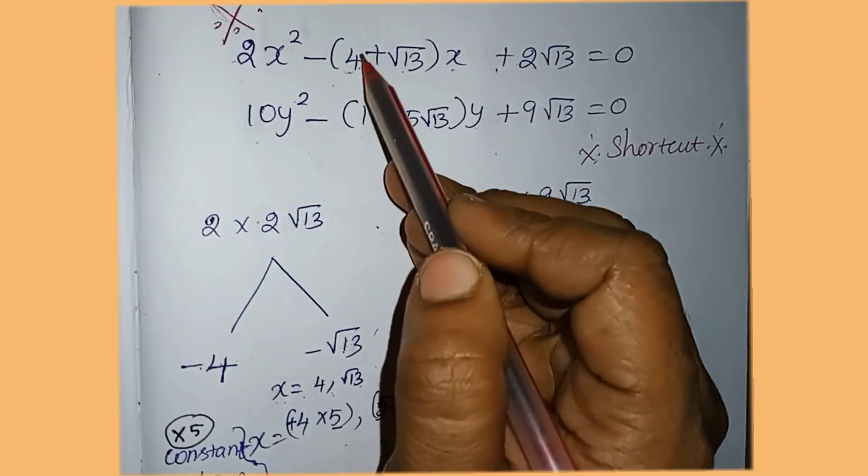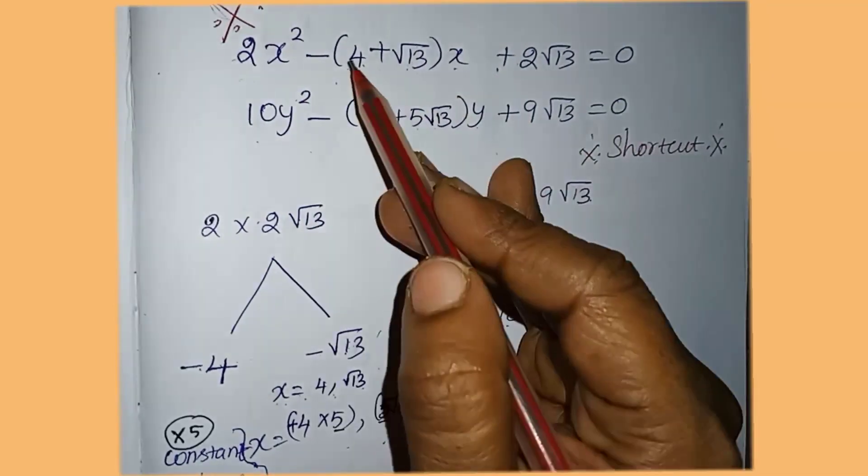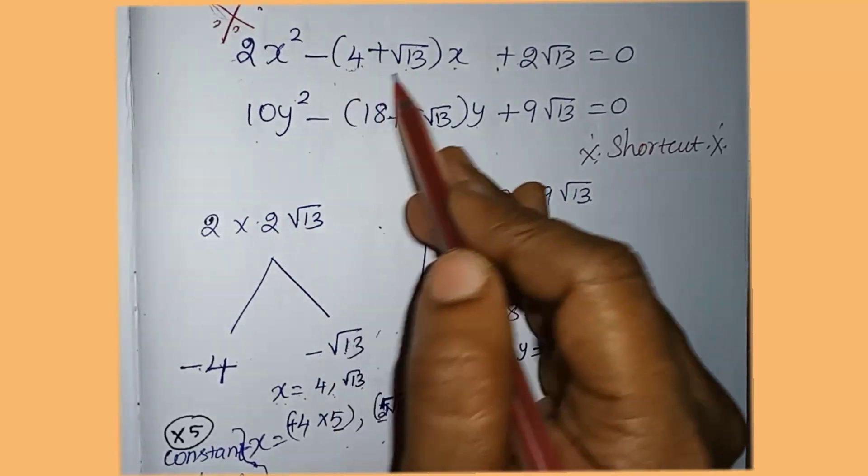If you have a term with a root, then you have a factor. For example, the value of x is minus 4, minus root 13.